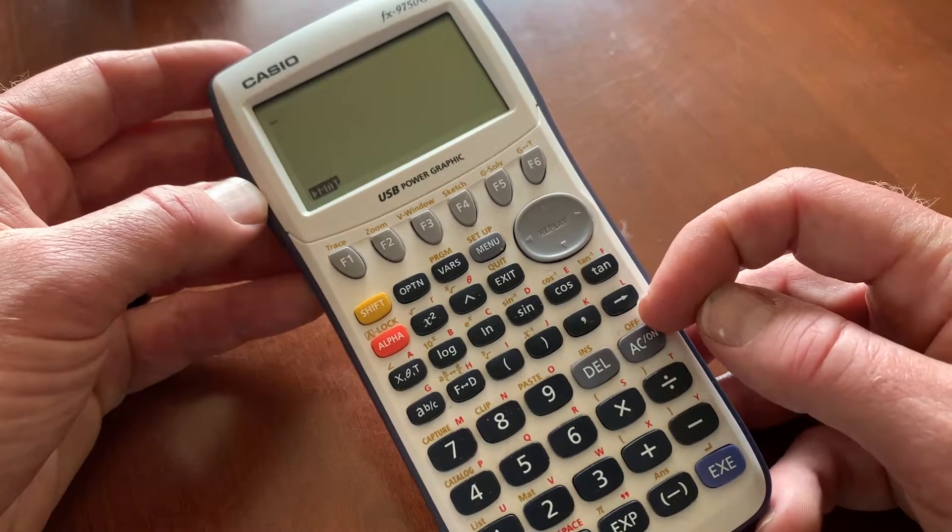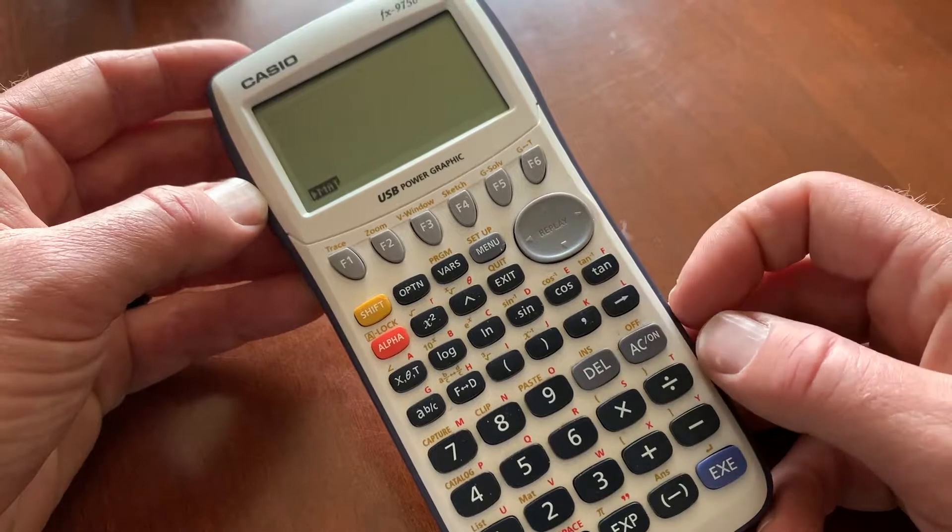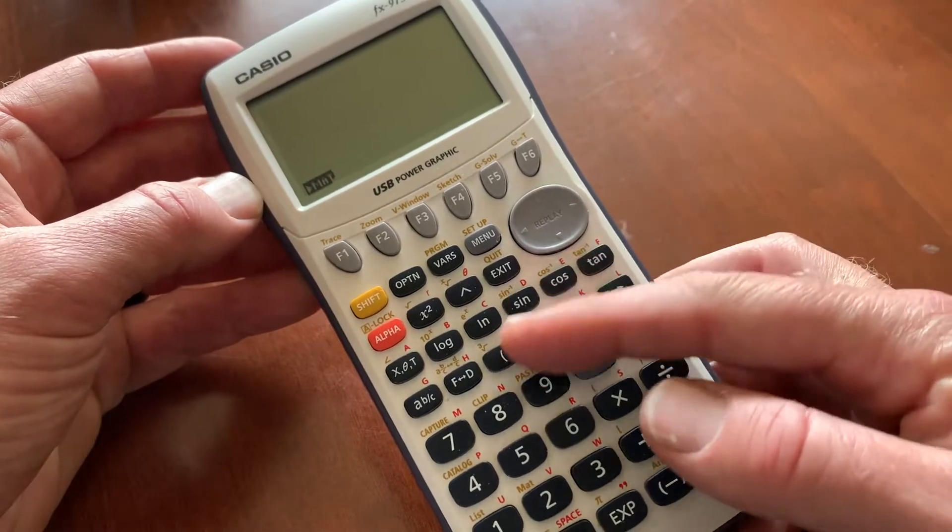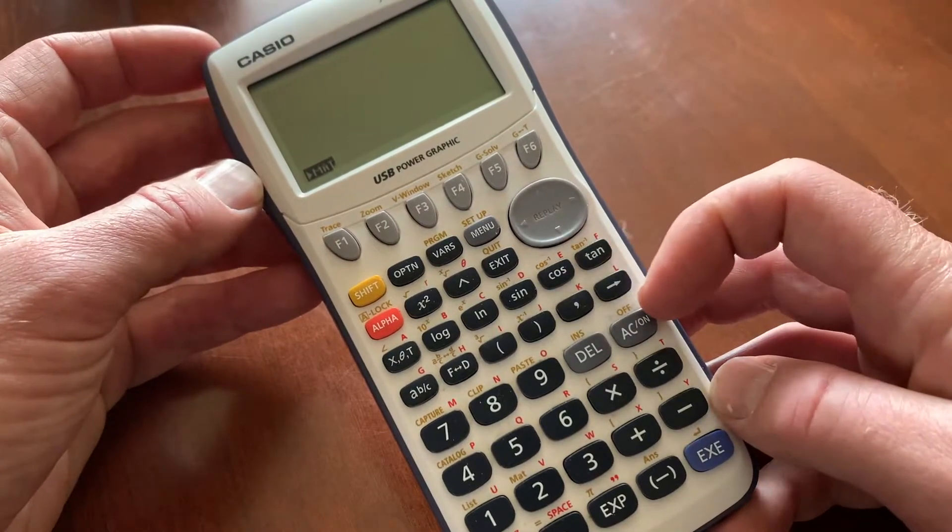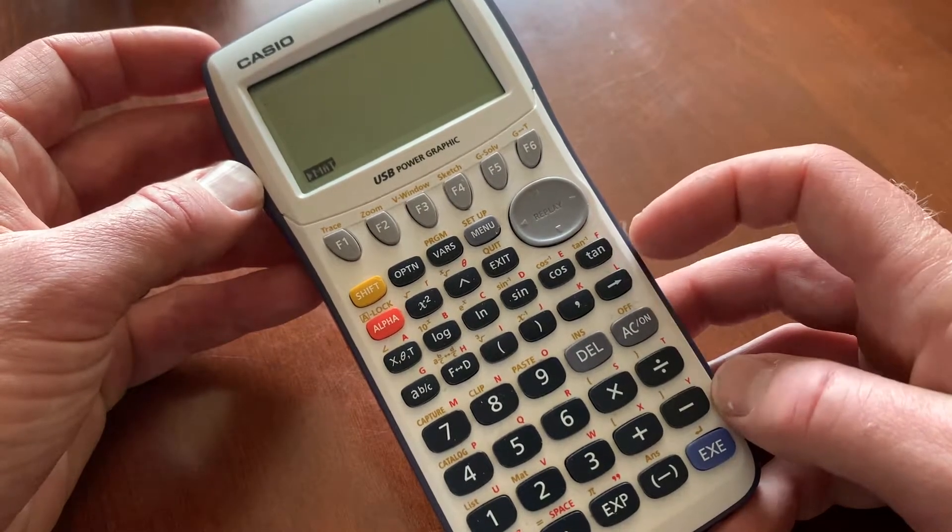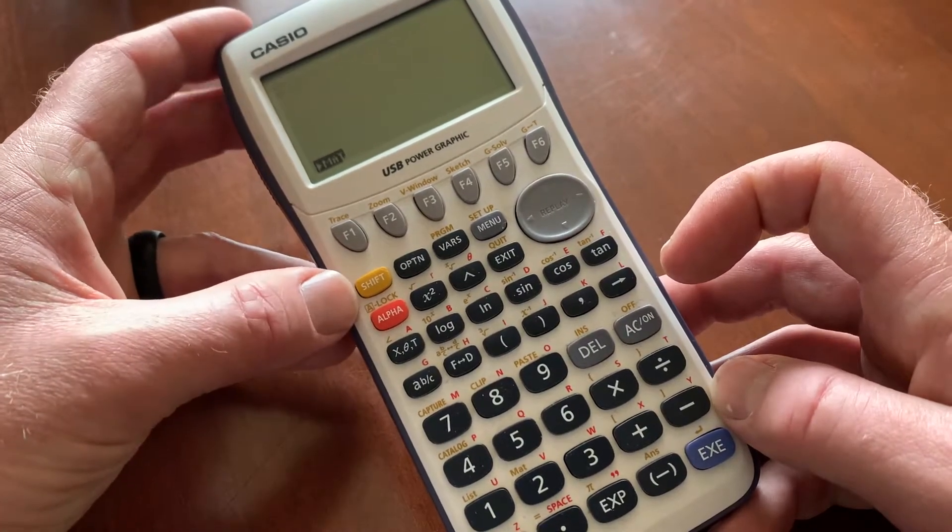And then there's this little off notification that's right above the button. And for some people, this gets a little bit confusing. Basically all of these buttons have secondary functions that are indicated either by the yellow or in this case, the orange. And to access those functions, you have a couple of buttons over here that are color coordinated.